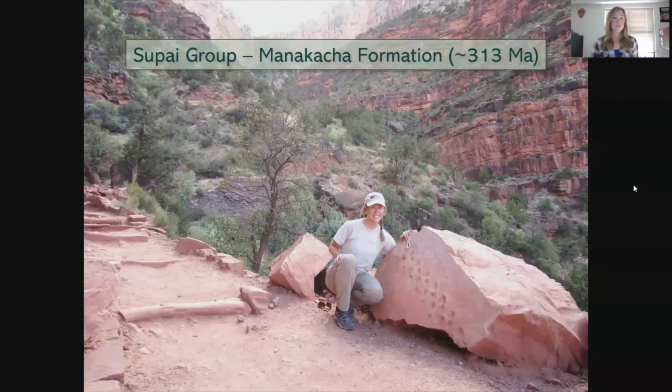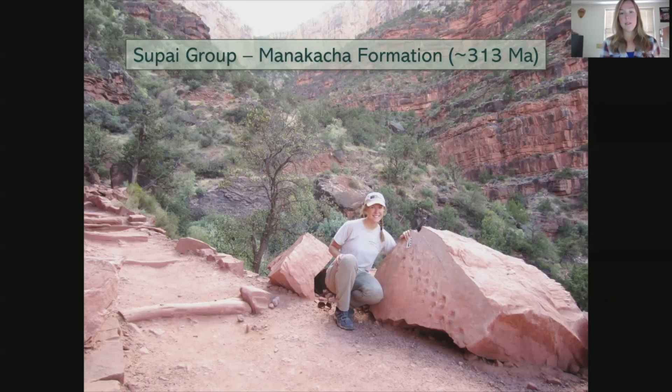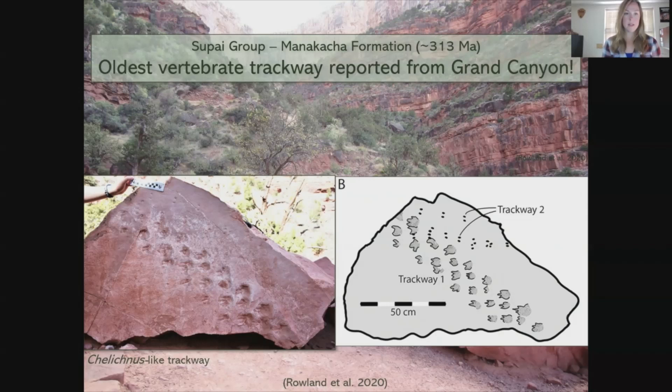Starting with the Supai Group, the Manakacha Formation is one of the lower formations at about 313 million years old. This is a picture of me sitting next to a reptile trackway found in the Manakacha Formation — it has been studied and there's a scientific paper on it. While there are other trackways within the Supai Group that may be older, this is technically the oldest vertebrate trackway officially reported from Grand Canyon, and we're hoping to find more in the future.